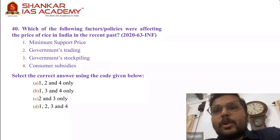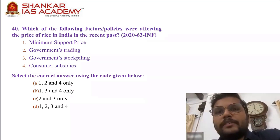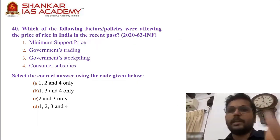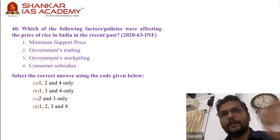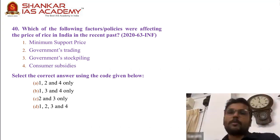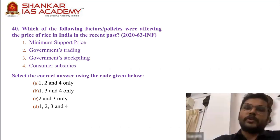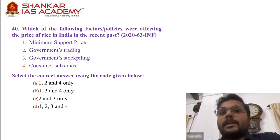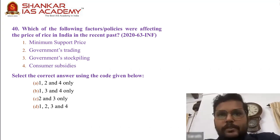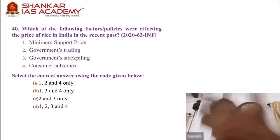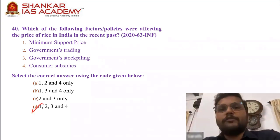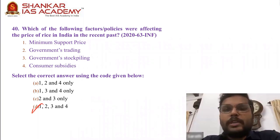Question 40: Which factors or policies were affecting the price of rice in India in the recent past? MSP determines the price because the government helps determine what price it is sold at. Government trading, government stockpiling, subsidies given to consumers — can you rule out any of these as factors affecting the price of rice? All four have a role in determining the price of any commodity. Rice is just the example given. D is the answer.